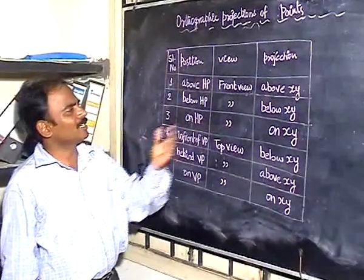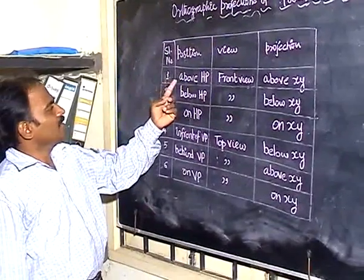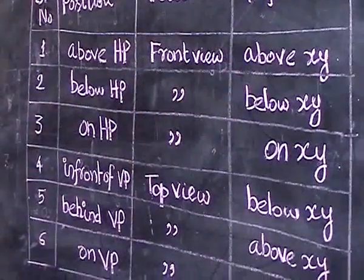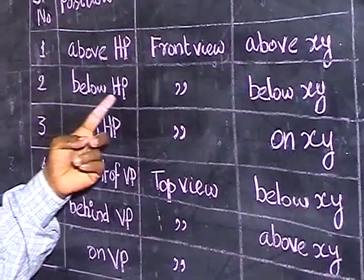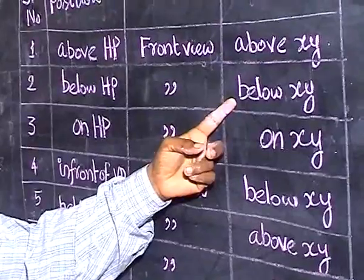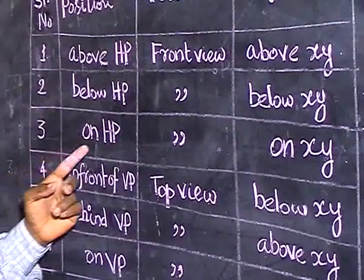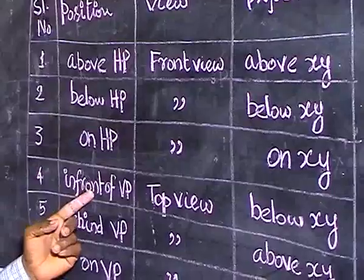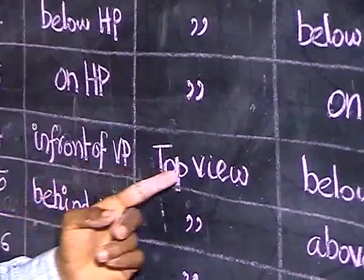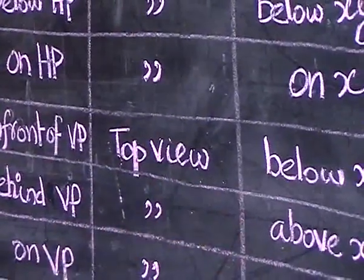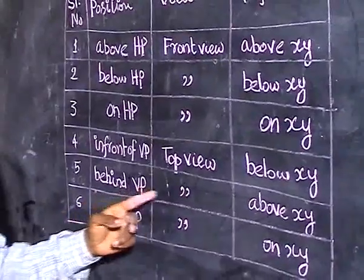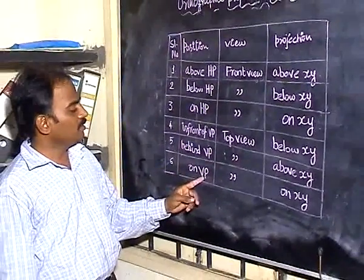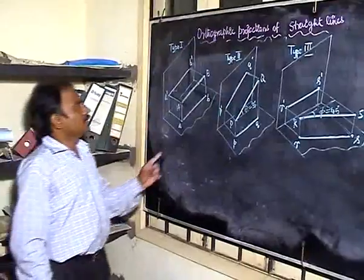We take the position, the view, and the corresponding projection. First case: position is above HP — it relates to the front view, so plot the answer above the x-ray line. Second case: position is below HP — relates to front view, plot the point below the x-ray line. Third case: position is on HP — relates to front view, put the point on the x-ray line. Fourth case: point is in front of VP — relates to top view, answer should be below the x-ray. Fifth case: position is behind VP — relates to top view, answer should be drawn above the x-ray line. Last case: on VP — relates to top view, answer on the x-ray line.